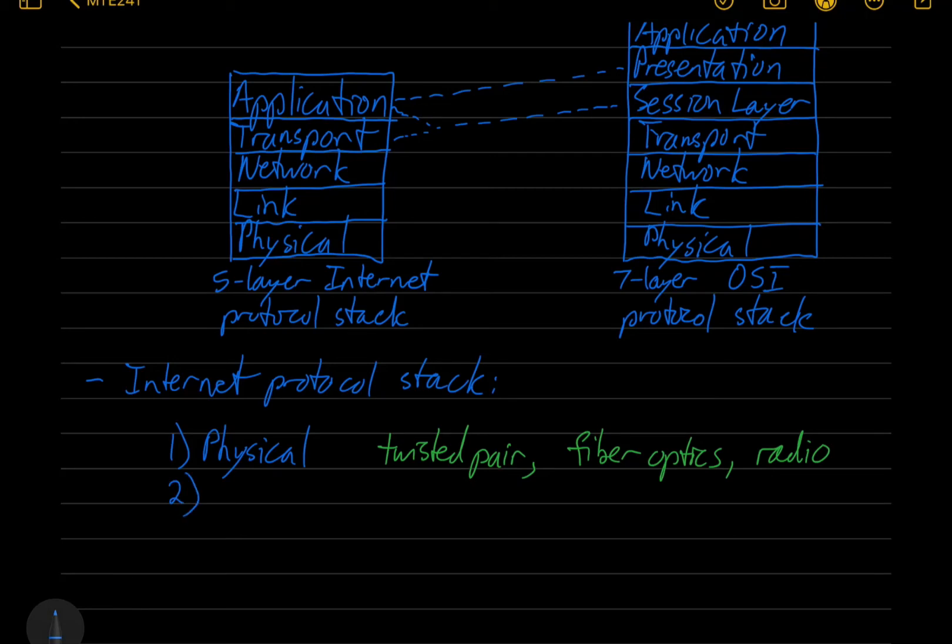The next layer is the link layer. This takes the values being sent over the physical layer and packages them into frames. Two common link layer protocols are Ethernet, which originally used coax cables but nowadays usually uses twisted pair cables and switches with IEEE standard 802.3, and Wi-Fi, which uses radio signals with IEEE standard 802.11.